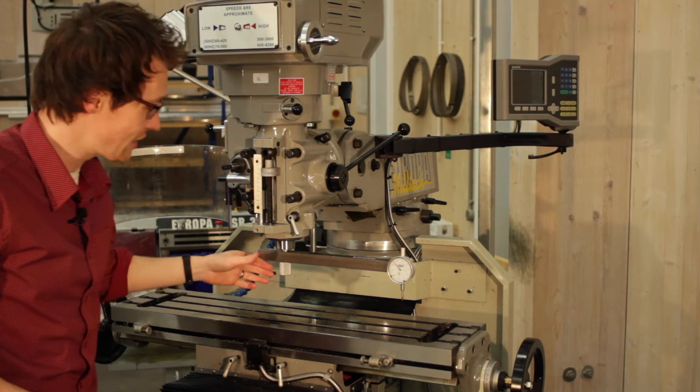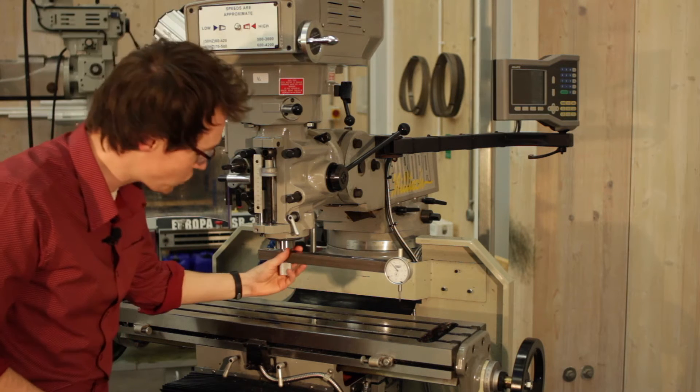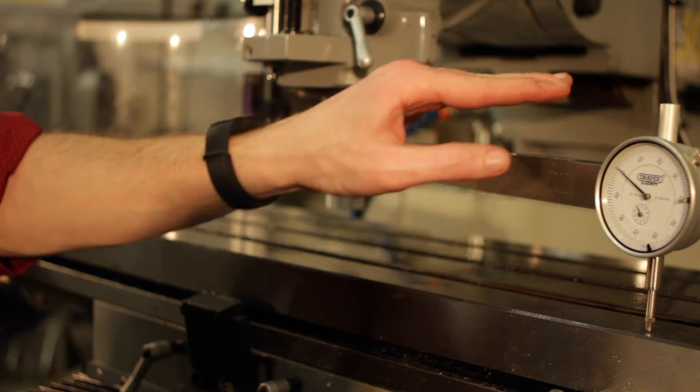Now it's really important to rotate the spindle end rather than the DTI end, because any slight amount of flex in the setup is going to affect the reading. So by rotating from the spindle we're minimizing any of those errors.